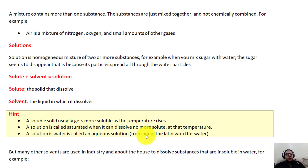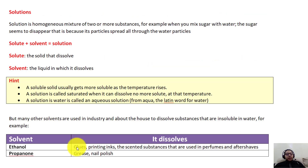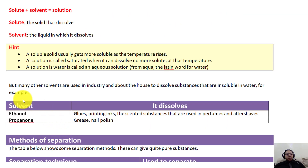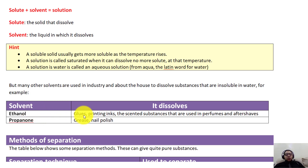Apart from water, we have other solvents such as ethanol and propanone, which can be used as organic solvents to dissolve organic compounds. These can dissolve glues, printing inks, and scents or perfumes, and sometimes amino acids as we'll cover later.